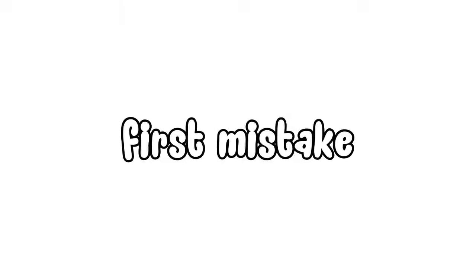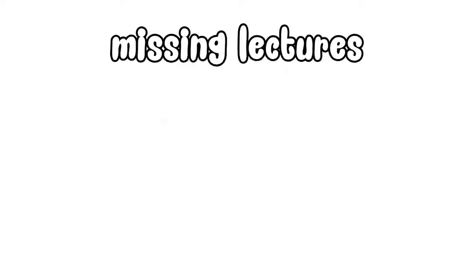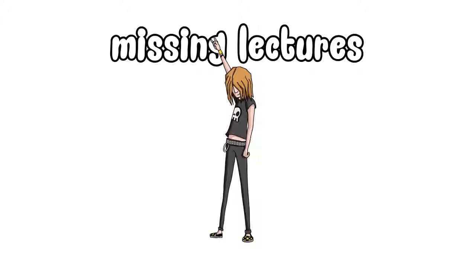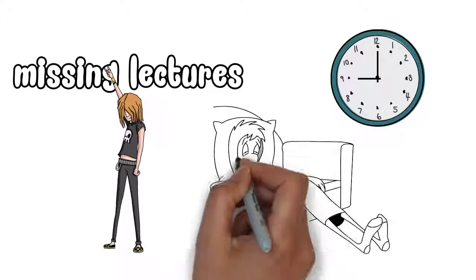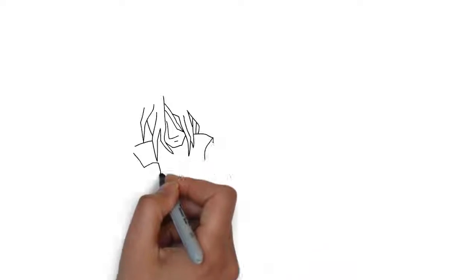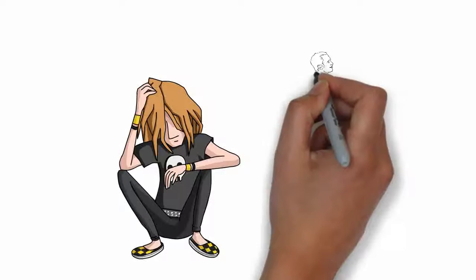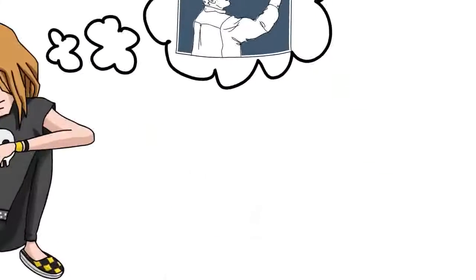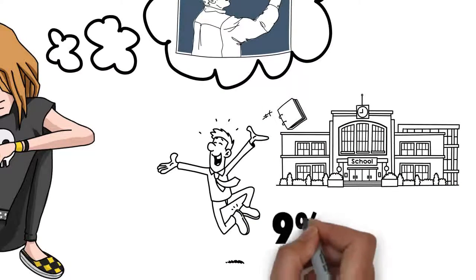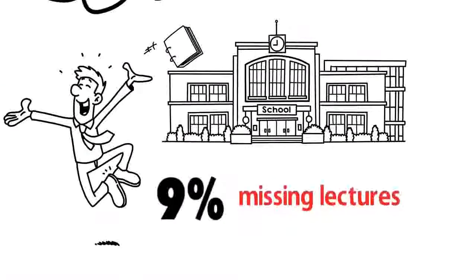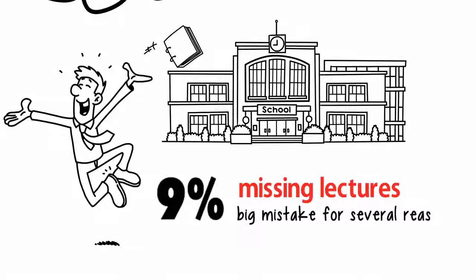So the first mistake is missing lectures. While not always compulsory, they're a necessary part of university, even those at 9 a.m. after a big night out. A lot of students think they can miss the odd lecture here and there and still do okay. In fact, on average students don't attend 9% of timetabled lessons, but missing lectures is a big mistake for several reasons.